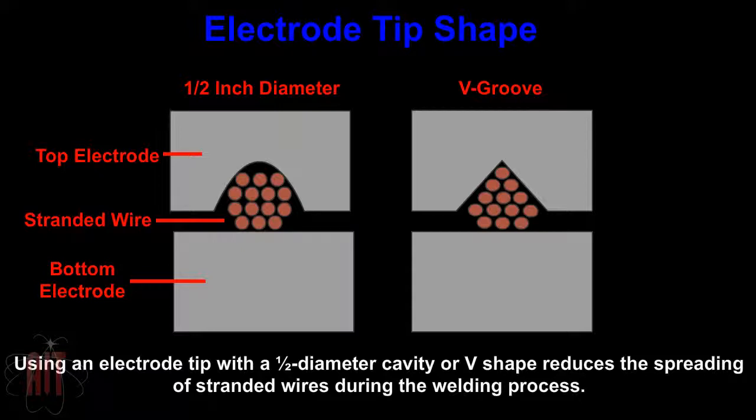Using an electrode tip with a one-half diameter cavity or V-shape reduces the spreading of stranded wires during the welding process.